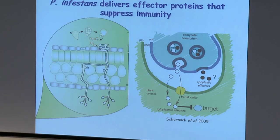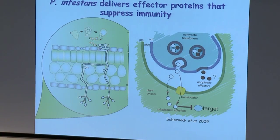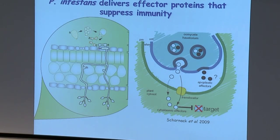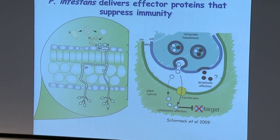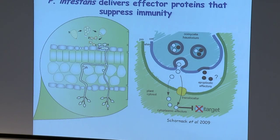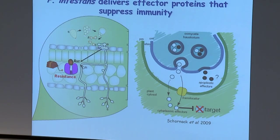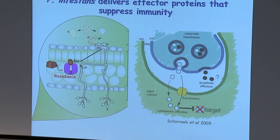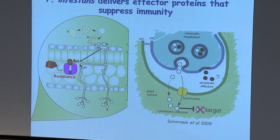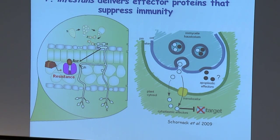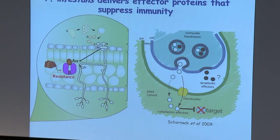Effectors can act in the apoplast or be delivered inside a living plant cell to manipulate host defenses. The dogma says that in many cases these effectors will directly target defense-associated proteins in the plant and manipulate their function to subvert the immune system — at this point the pathogen's winning. But if any of those effector proteins are recognized by a resistance protein in the plant, they get called avirulence proteins. That cell can commit suicide — the localized programmed cell death called the hypersensitive response — and the pathogen is prevented from spreading further.